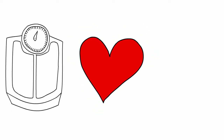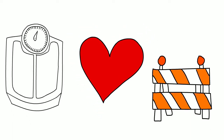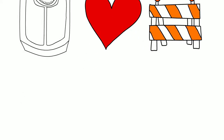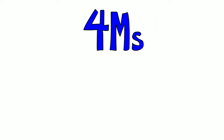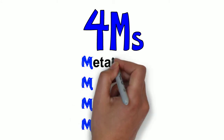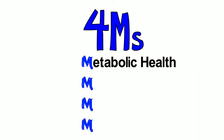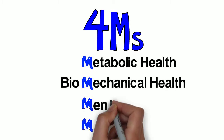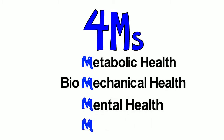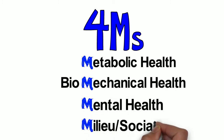Next, we can move on to assess the main domains of health that are impacted by body weight or that can make weight management more challenging. To do this, we can use the 4Ms framework that breaks these domains down into four categories: metabolic health, biomechanical health, mental health, and milieu or social health.